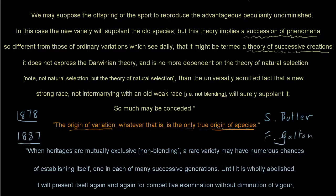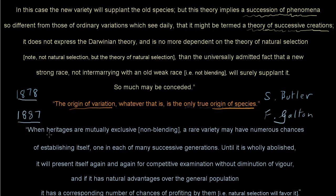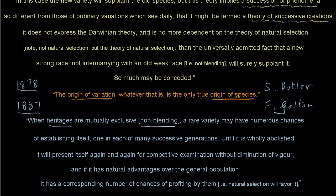When heritages are mutually exclusive — that is, non-blending — a rare variety may have numerous chances of establishing itself, one in each of many successive generations. Until it is wholly abolished, it will present itself again and again for competitive examination by natural selection, without diminution of vigour. And if it has natural advantages over the general population, it has a corresponding number of chances of profiting by them — that is, natural selection will favour it.